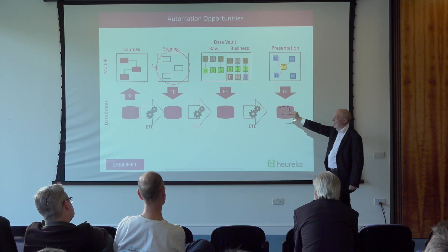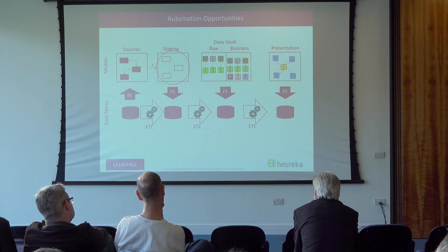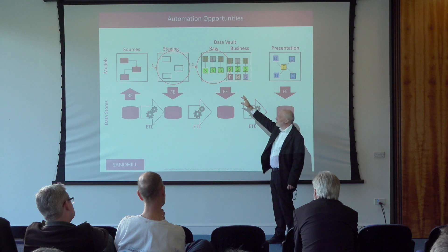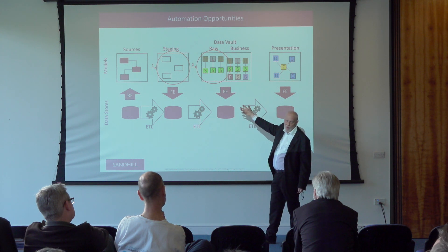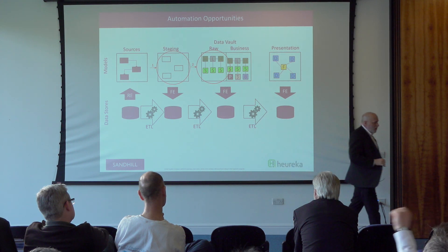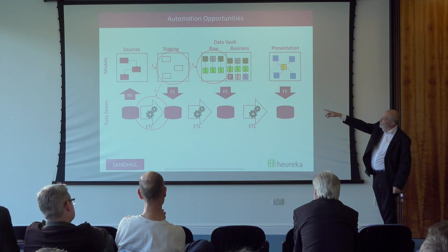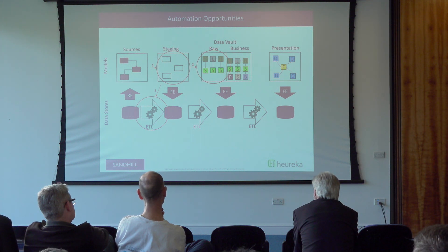Similarly, we know what the raw vault structure is going to look like based on what we've got in the staging area, so we can generate that too. And because we know all of those structures, we can also generate the ETL to move from source to staging and from staging into the raw vault.